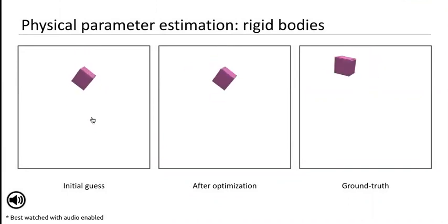On the left is our initial guess where the parameters are randomly picked from a uniform distribution. Upon backpropagating through GradSim, we are able to precisely recover the physical parameters as seen in the center figure.